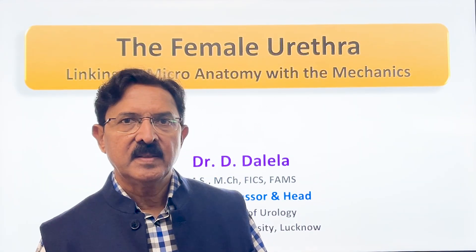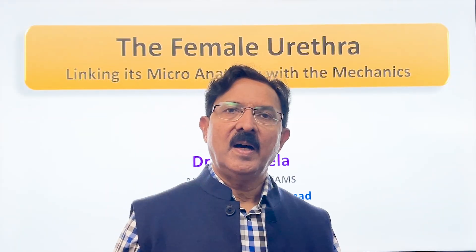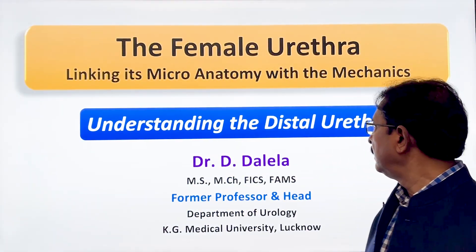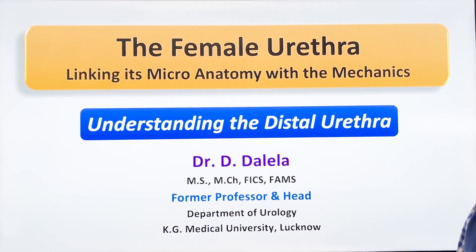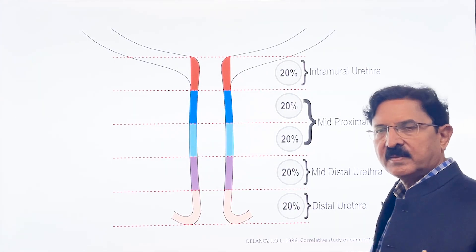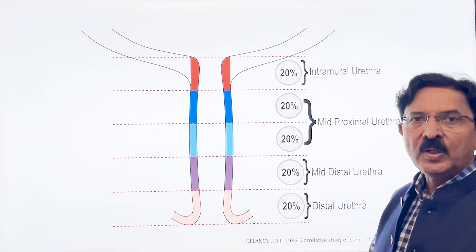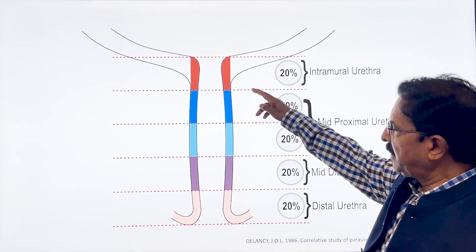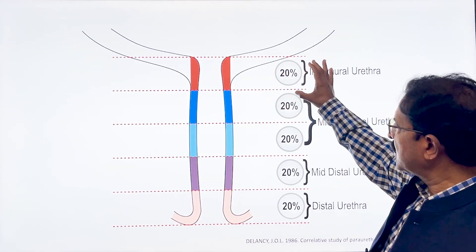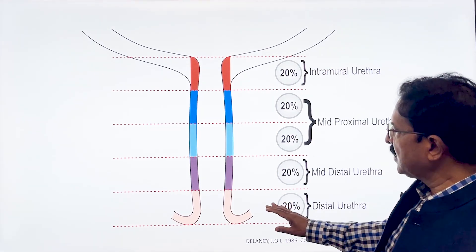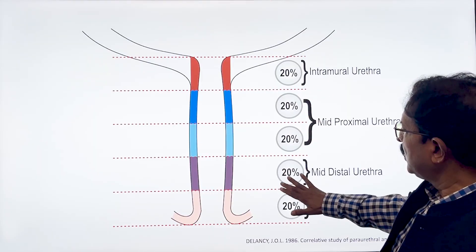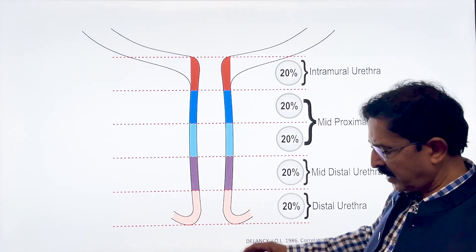In this presentation, I want to speak to you about the distal urethra. I hope you recall this background, wherein I told you that urethra in a female is subdivided into five parts or percentiles. We have talked about intramural urethra, we have talked about the middle urethra, and now in this presentation I am talking to you only about the distal urethra.